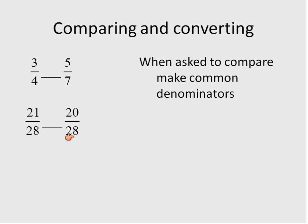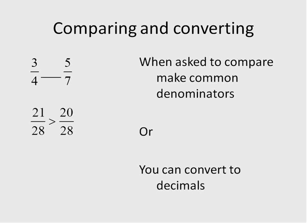And these ones now have a common denominator, so we can easily tell that 21 is greater than 20. Therefore, 21 out of 28 is bigger than 20 out of 28. The other way is to convert them into decimals. 3 over 4 is the same as saying 3 divided by 4, which gives us 0.75. 5 divided by 7 gives us 0.71428 and it keeps going on. So again, when we're comparing them, 0.75 is greater than 0.71.